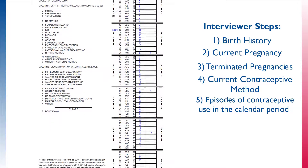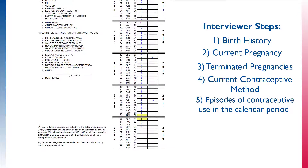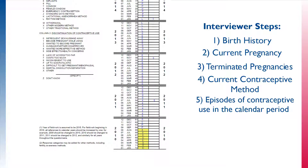Now the interviewer will ask about the episodes of contraceptive use in order to fill in the earliest year of the calendar. The interviewer asks about the two-month gap after the termination of the pregnancy in 2010 and before the use of the injectable in 2011. The respondent reports no method. Lastly, the respondent reports that she was using no method in the beginning of 2010 before her pregnancy that ended in a termination.